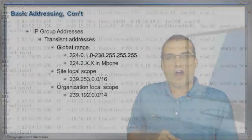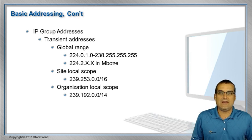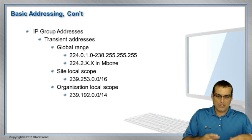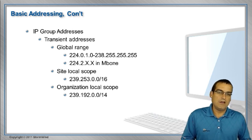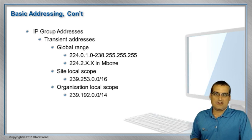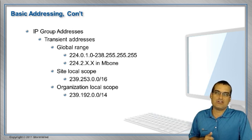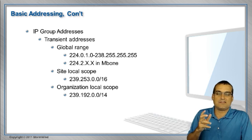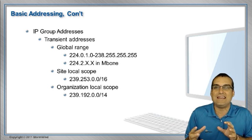There are other address ranges in the multicast scope that are reserved. They took transient address ranges and defined those. Transient addresses can be utilized by applications and then surrendered by applications in various scopes. There's a global range from 224.0.1.0 to 238.255.255.255. As an example, addresses beginning with 224.2 are for multicast backbone applications — applications being used in the multicast backbone of the internet itself, representing a remarkably vast scope.